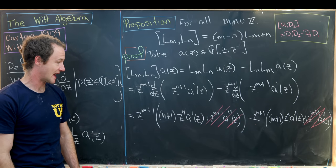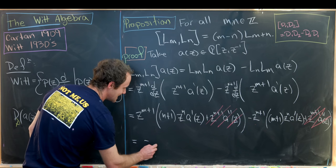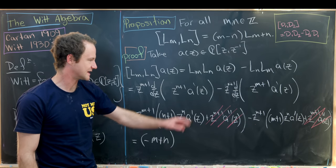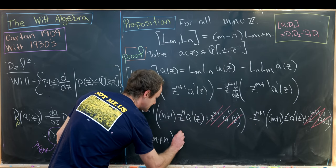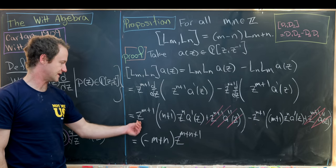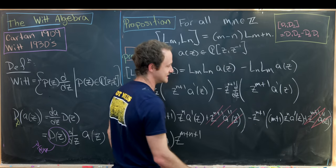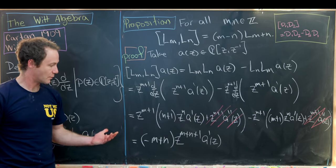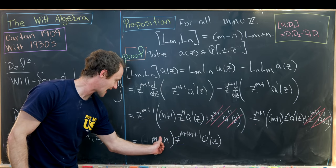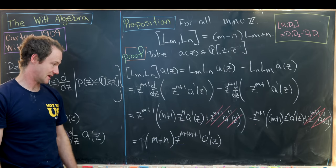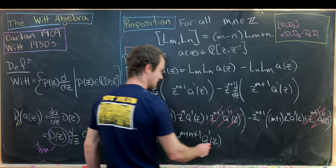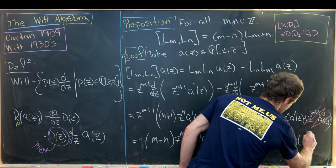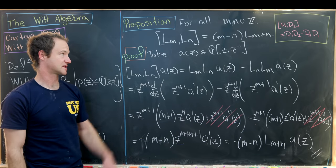After the second-derivative terms cancel, we collect the remaining terms: −(m+1) z^(m+n+1) · A′ and (n+1) z^(m+n+1) · A′ combined give −(m−n) z^(m+n+1) · A′(z). Factoring out the minus sign, this equals (m−n) · (−z^(m+n+1) · d/dz) A(z) = (M − N) · L_(M+N)(A(z)), which is exactly what we needed to prove the commutation relation.